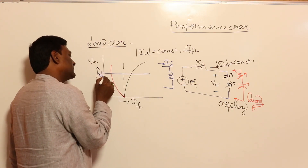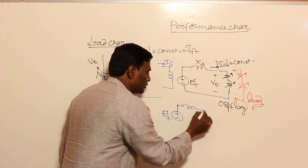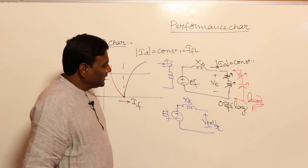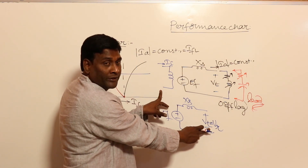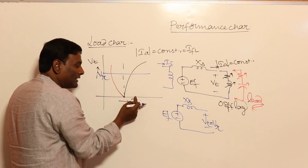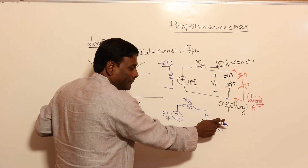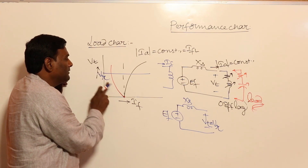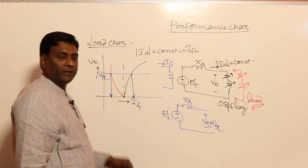How to remember this? Very simple — think of rated terminal voltage. If the load is lagging and terminal voltage is rated, EF must be more, so field current must be more. For rated voltage under lagging conditions, field current is higher. Under leading conditions, to maintain rated terminal voltage, EF should be less, so field current is less. Lagging: more field current; leading: less field current.